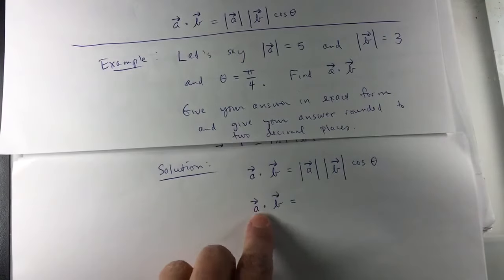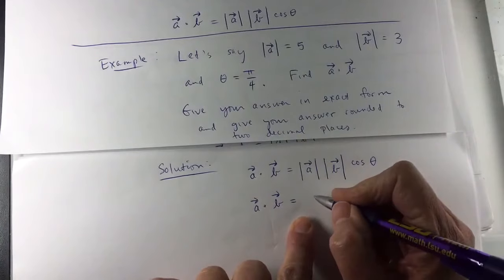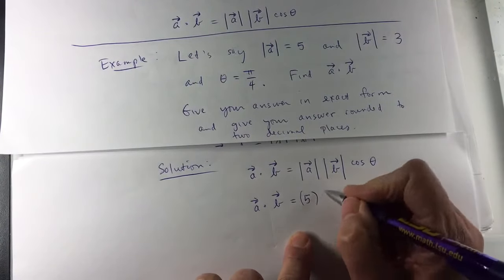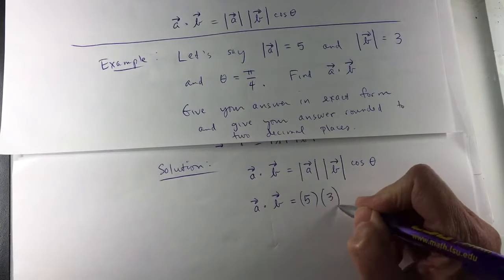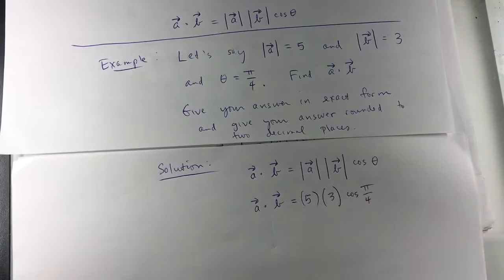So I have A dot B, the magnitude of A is 5, the magnitude of B is 3, and then I need the cosine of π over 4.